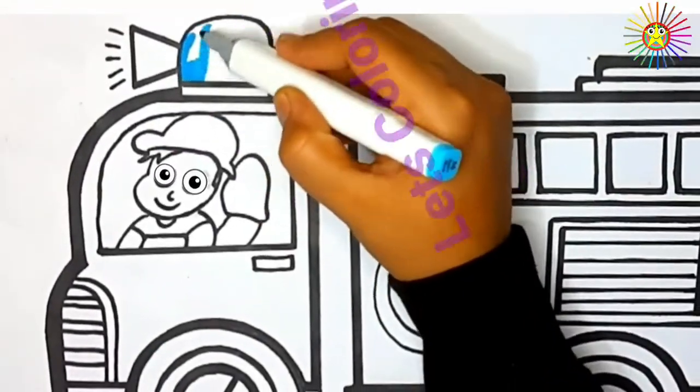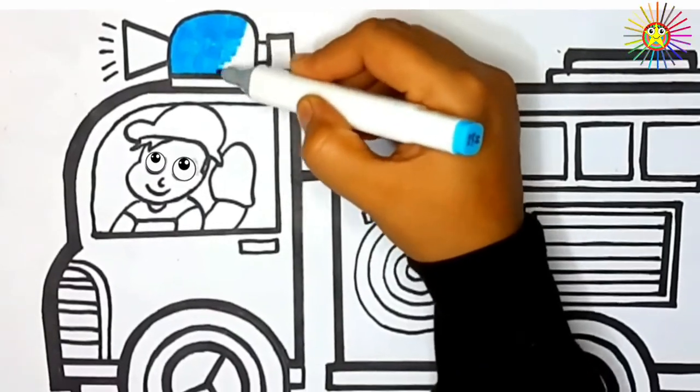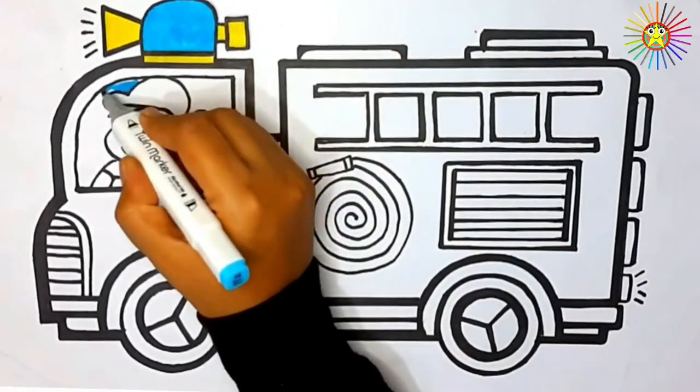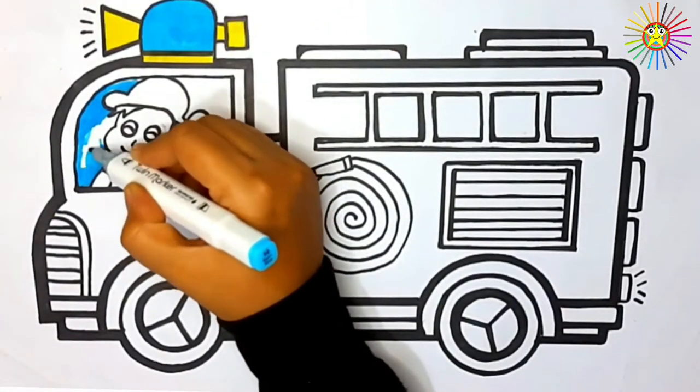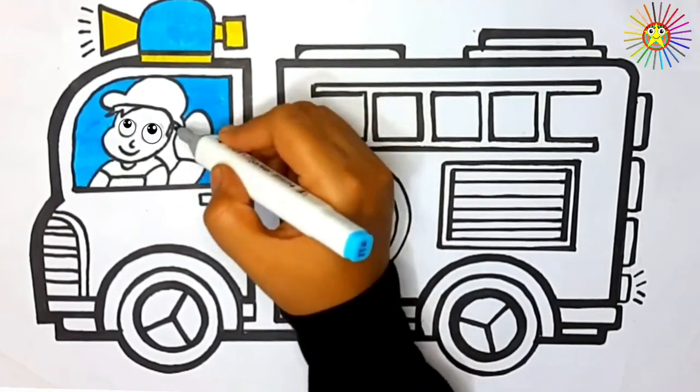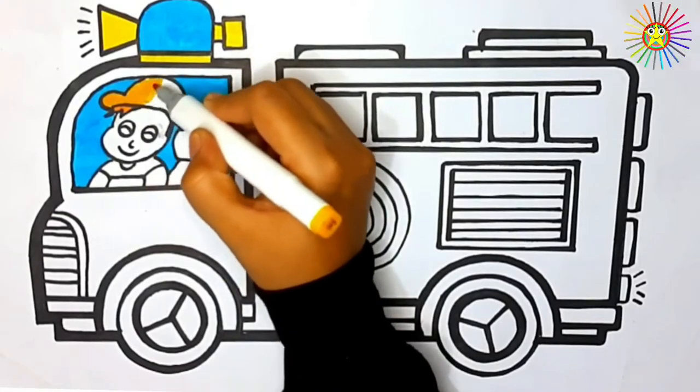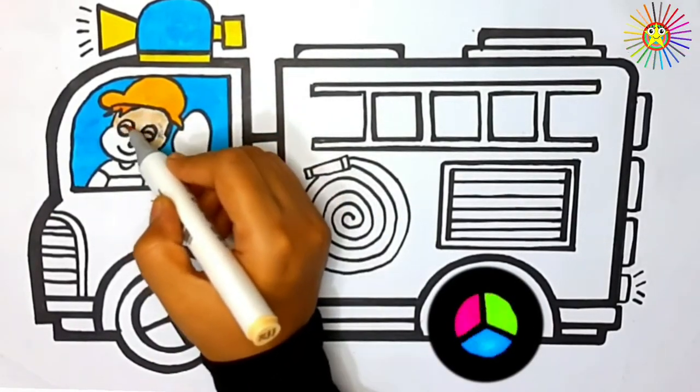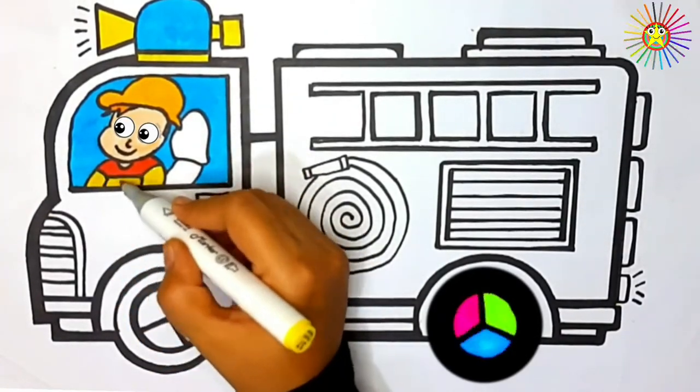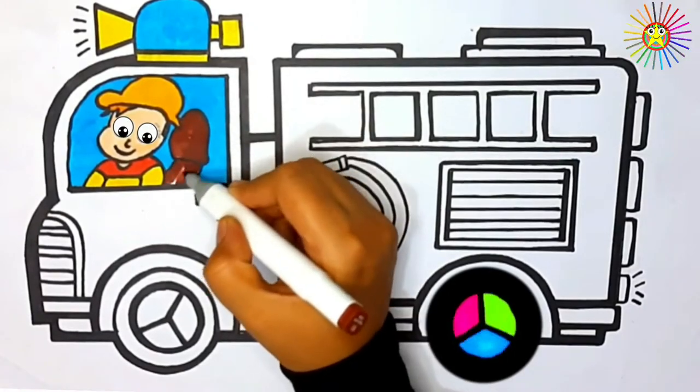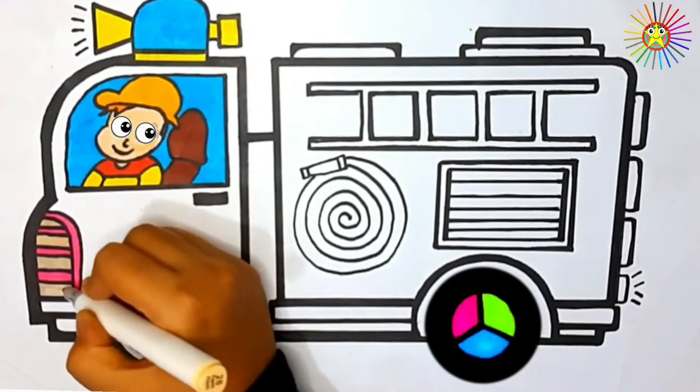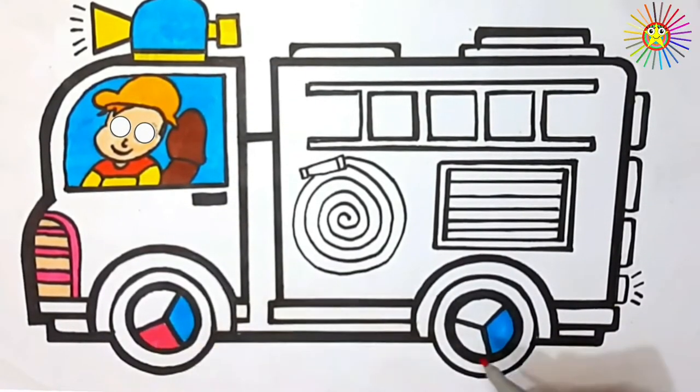Next, coloring. Blue, yellow, orange, beige, red, brown, pink, green.